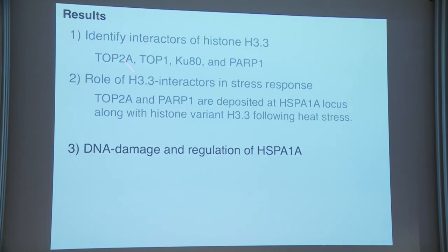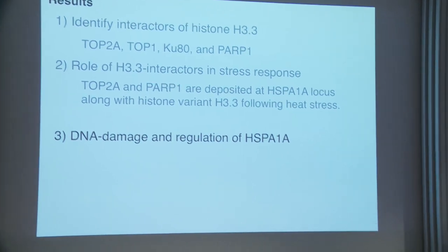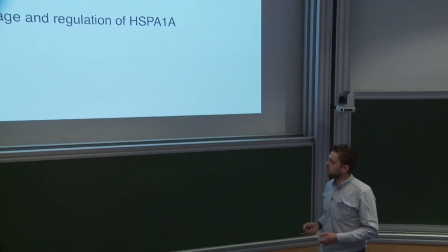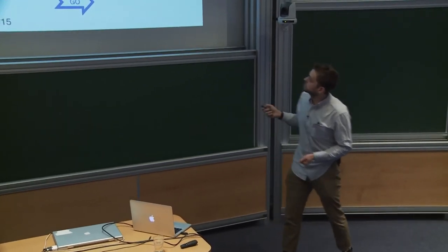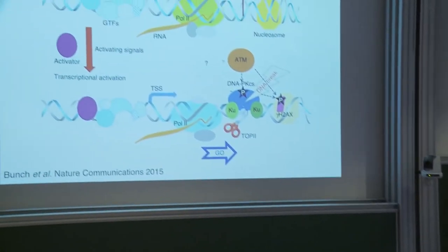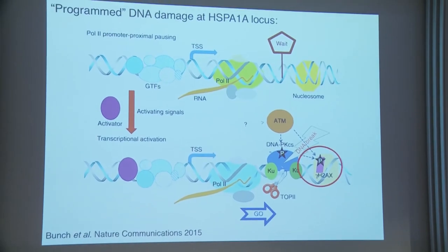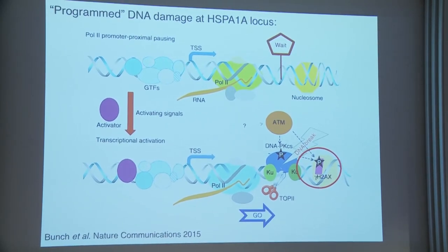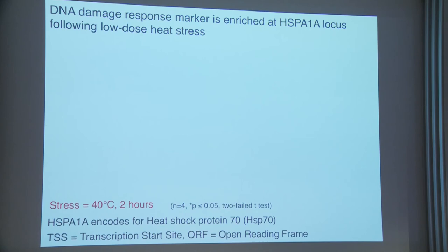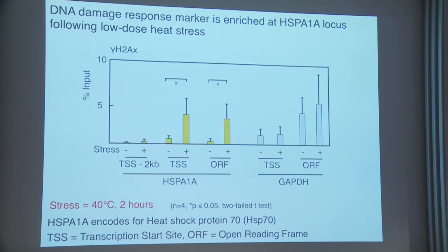With H3.3, TOP2, and PARP all present after stress, I wanted to ask about DNA damage. TOP2A likely induces DNA damage, and PARP probably repairs it. To look at DNA damage, I examined gamma-H2AX — a classic DNA damage marker from the programmed DNA damage model. I found that gamma-H2AX is significantly increased at the TSS and ORF of HSPA1A following low-dose heat stress.